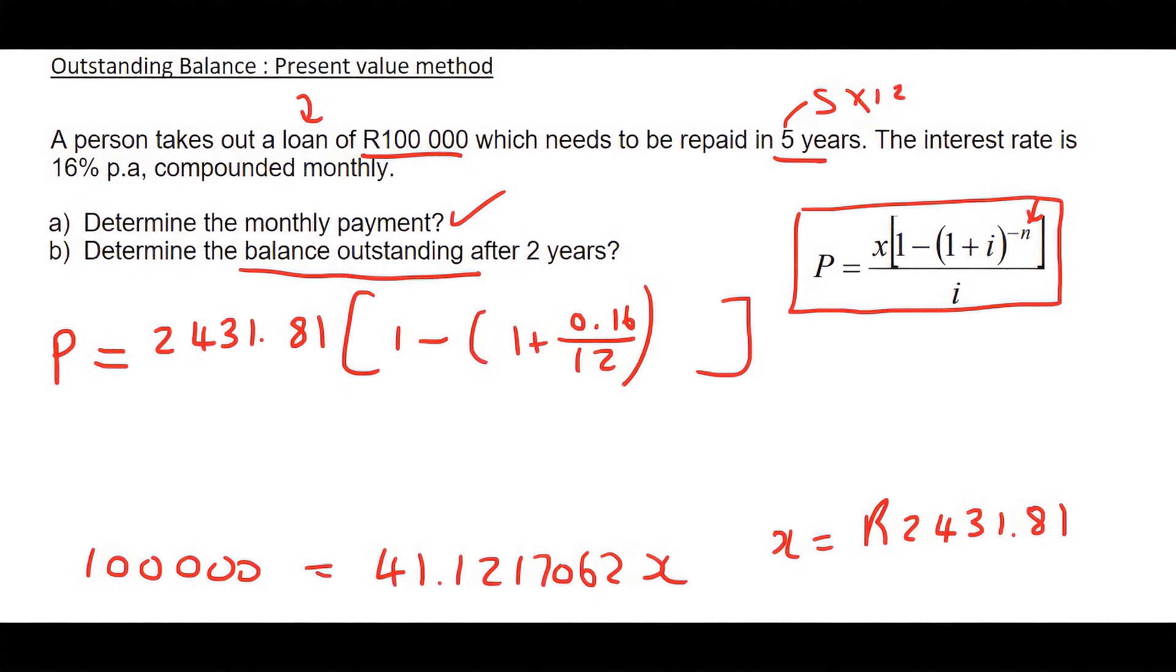Now, it's a five-year question, but they want to know what is the balance outstanding after two years. So how many years do we still have? Well, we still have another three years. And so, 3 times 12 is 36. And that's it.